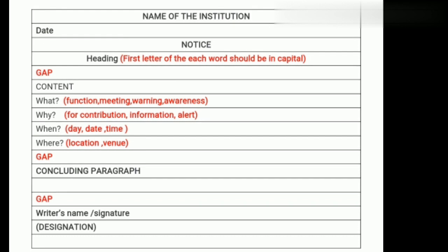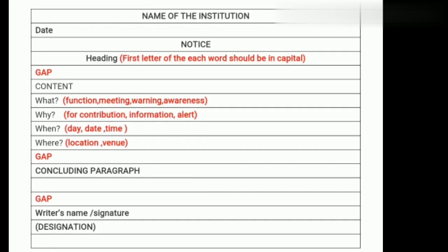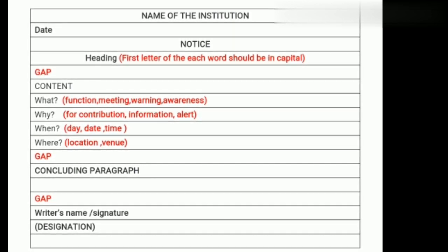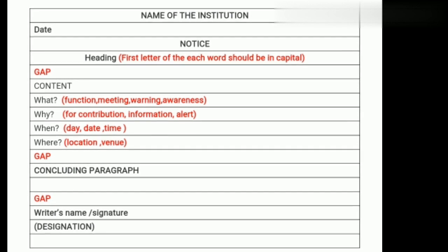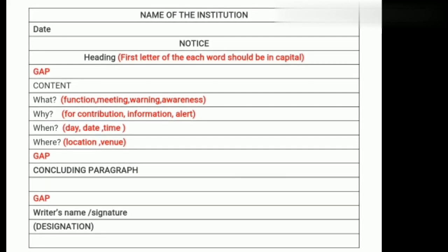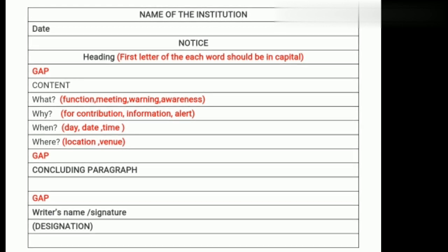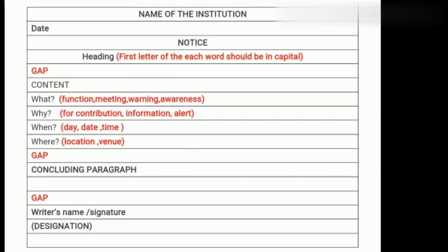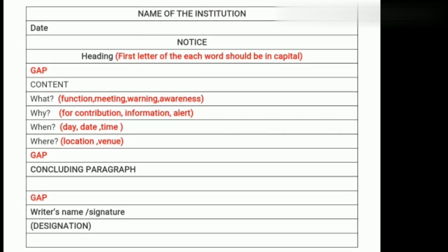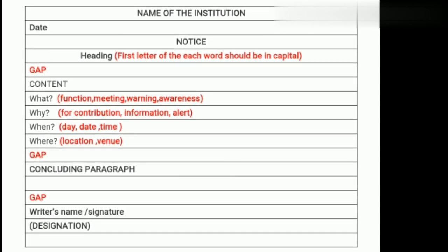The concluding paragraph could be just a line. Usually we write 'For further information, contact the undersigned.' I will show you the example, then it will be more clear. At last we have to mention the name of the issuer or signature, and below that their designation within brackets. This is the format.